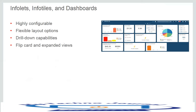The interface provides drill-down capabilities where you can click on an area in a chart or infolet and it will show you all the items or records for which picking, receipt, or receiving is required. You can also have capabilities like flip card and expanded views as well.